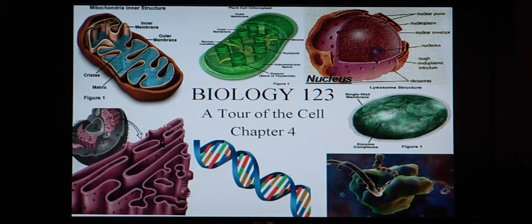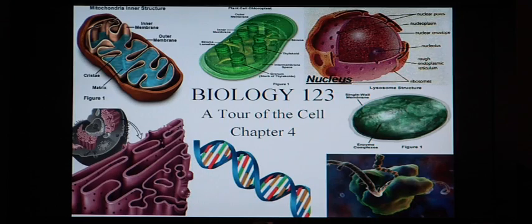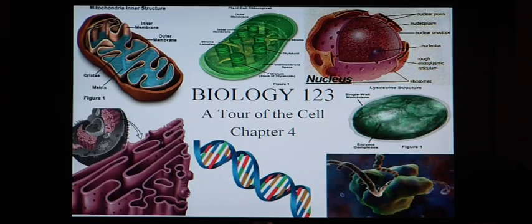Chapter four: a tour of the cell. As we started out the class in chapter one, we introduced the hierarchy of life, which began with the atom and worked its way up to the molecule, then the organelle, and the cell. In chapter two we talked about the atom and combined that into molecules, and in chapter three we covered molecules. So now we're working into organelle and then cell as we move up the hierarchy of life.